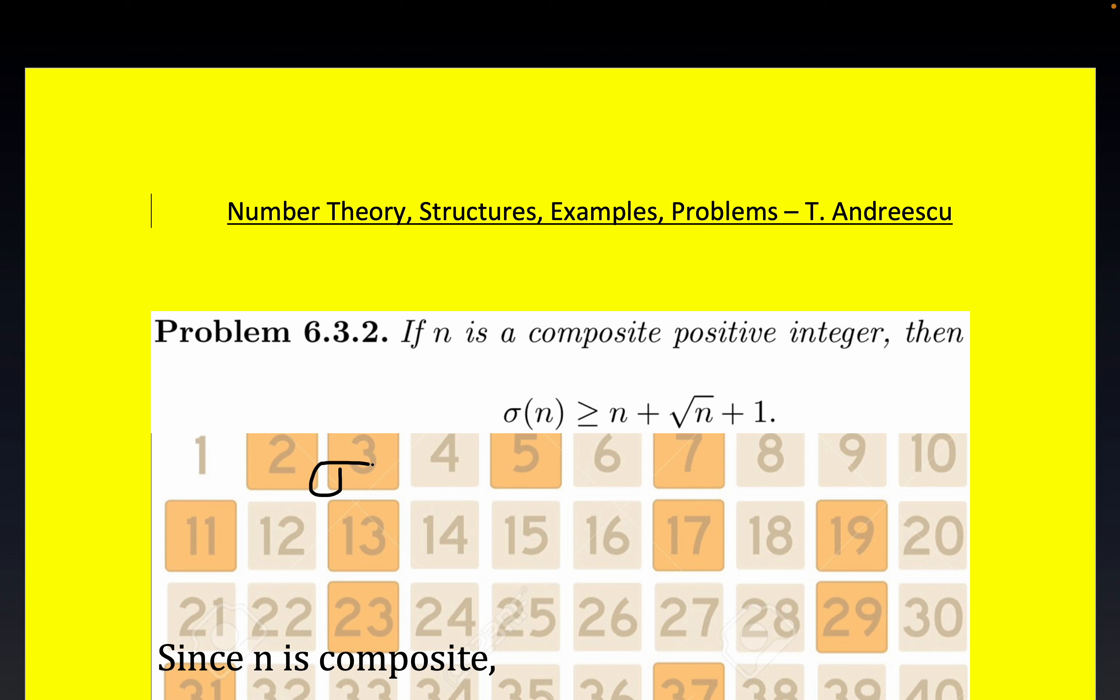We're talking about a very crude lower bound for the sum of the divisors formula. This is sometimes called the sigma formula. Now sigma of five just means to sum up the two divisors of five. Now five is prime.